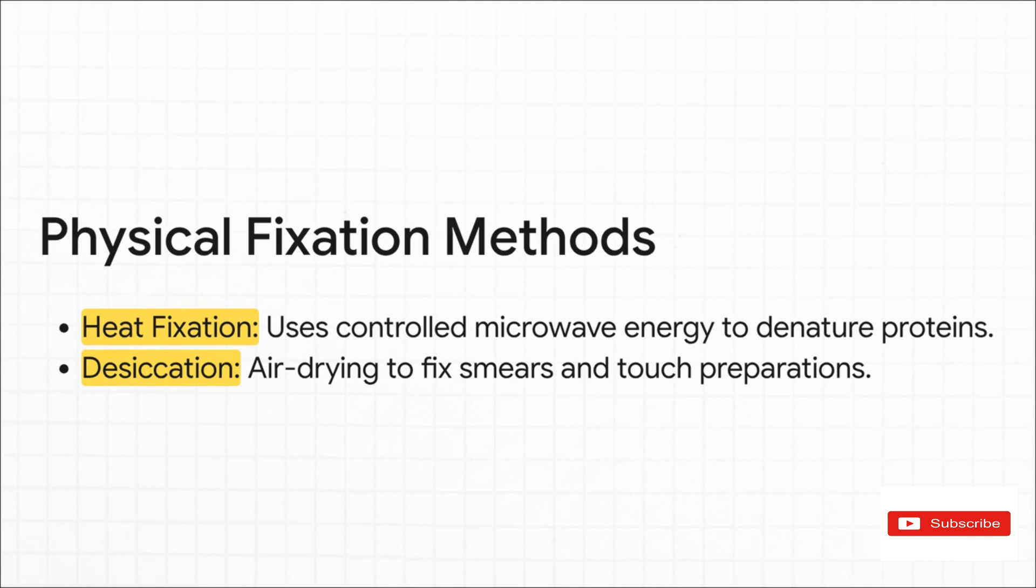Heat fixation, usually with a very carefully controlled microwave, uses thermal energy to denature proteins incredibly fast. Desiccation is even simpler. It's just air drying. This would be a total disaster for a solid piece of tissue, but it's actually the perfect, standard method for fixing a single layer of cells, like in a blood smear or a touch prep on a glass slide.